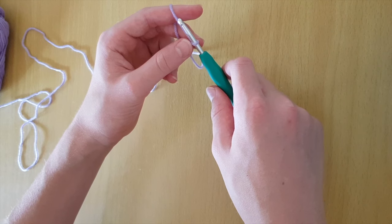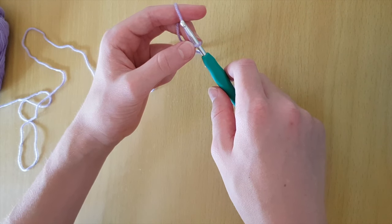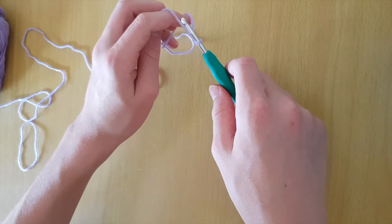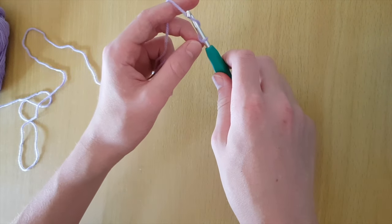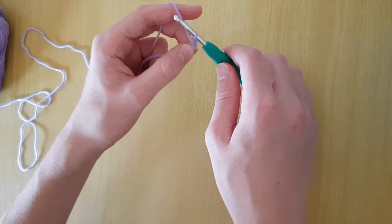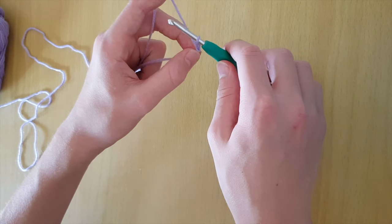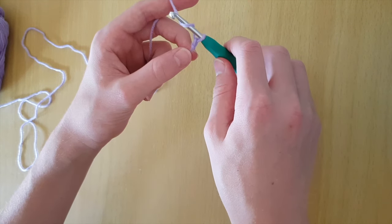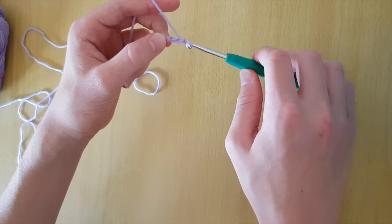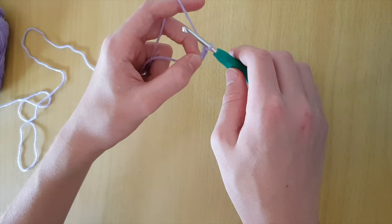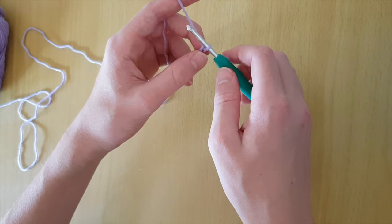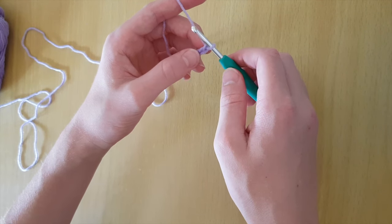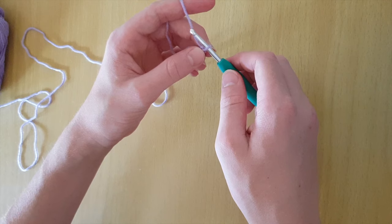Now you will need to create a foundation chain row. To create this foundation chain row you need to make chains. For this project you will need 15 chains. To make a chain, wrap around and pull through. Take your hook, take it left to right, and then pull through the yarn. This creates a chain.